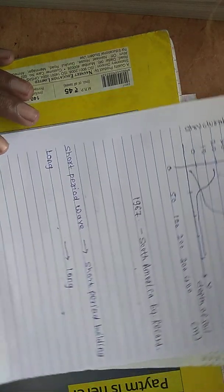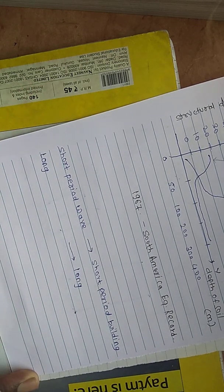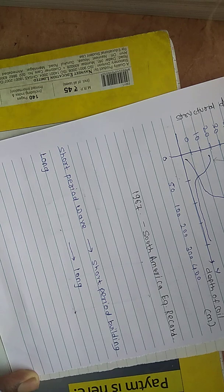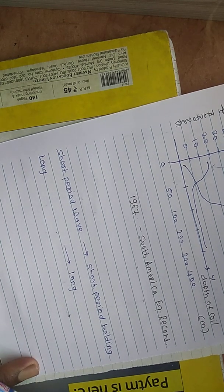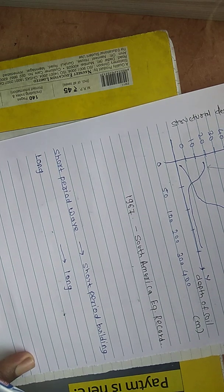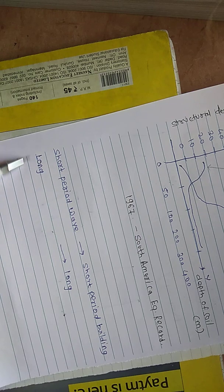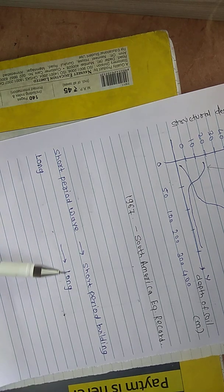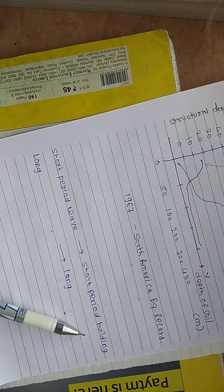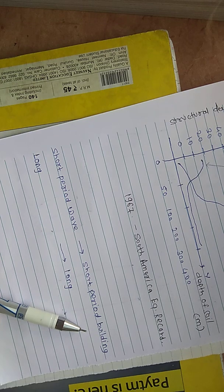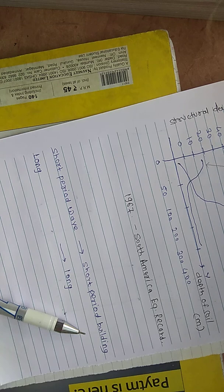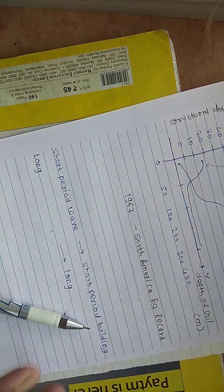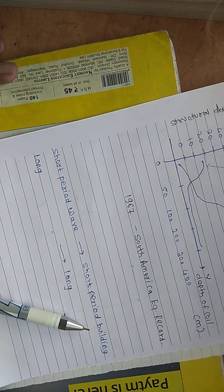Now another point which is the last point for today's video is short period wave and long period wave. We know earthquake comes in the form of waves. If the wave is short, then it will affect more the short period building. And if the long period waves are coming, then that will affect long period buildings. So I will summarize: depending on the value of T of the building and on the characteristics of earthquake ground motion, some buildings will be shaken more than the others. This is one way to categorize the buildings from a city depending upon the soil and the natural period T.